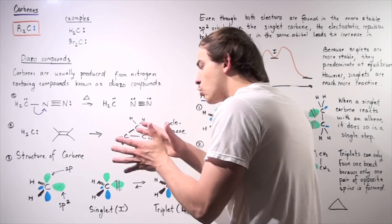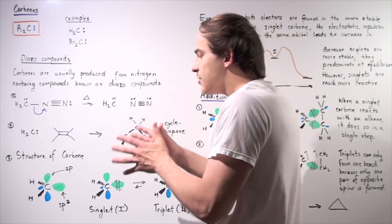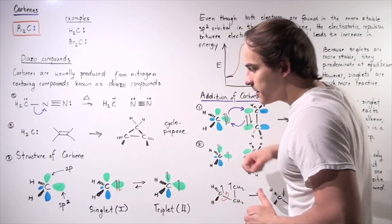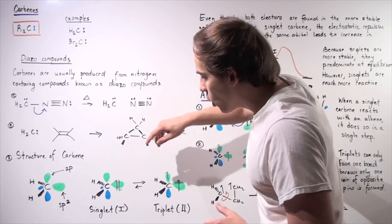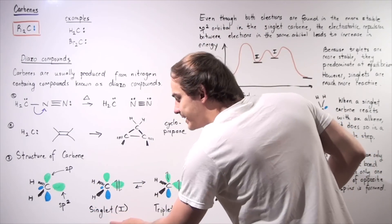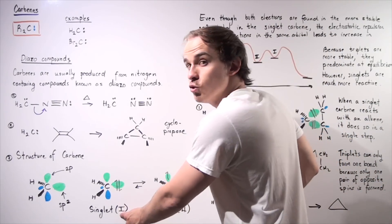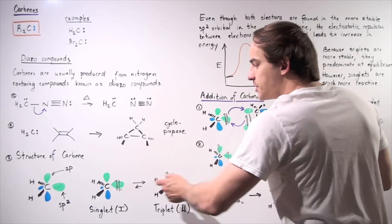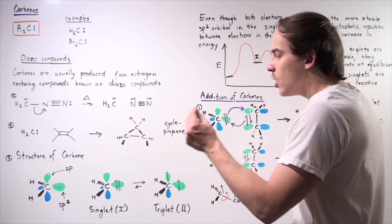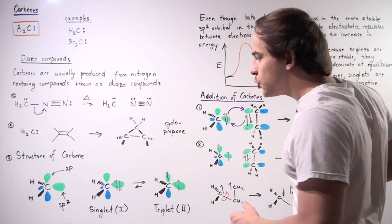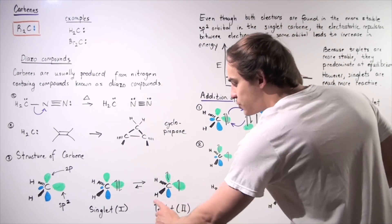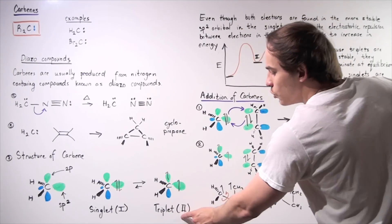There are two different ways we can arrange those electrons. We can take both electrons and place them into the sp2 hybridized orbital — this carbene is known as a singlet, represented by Roman numeral I. Another way is to take one electron out and place it in the empty 2p orbital. This is the second arrangement, known as the triplet carbene, represented by Roman numeral II.